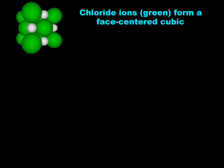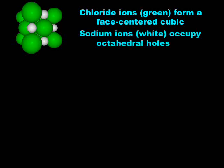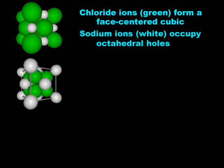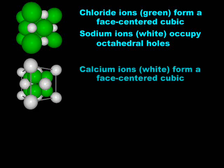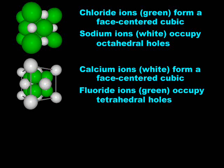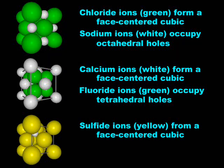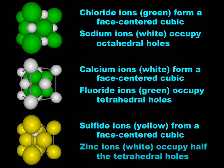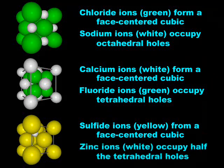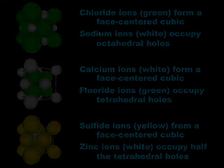Let us take a moment to review. The halite or sodium chloride structure can be viewed as a close-packed array of chloride ions with the sodium ions in all of the octahedral holes. The fluorite or calcium fluoride structure can be viewed as a close-packed array of calcium ions with the fluoride ions in all of the tetrahedral holes. The sphalerite or zinc sulfide structure can be viewed as a cubic close-packed array of sulfide ions with the zinc ions in half of the tetrahedral holes.